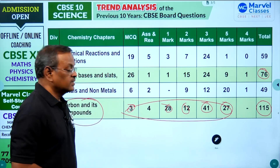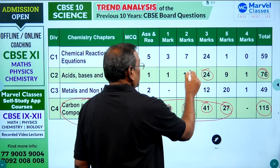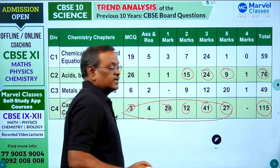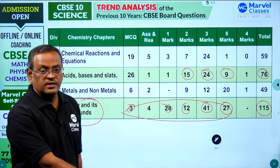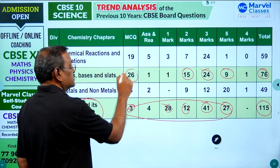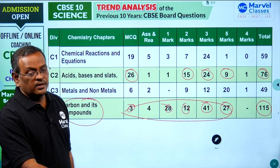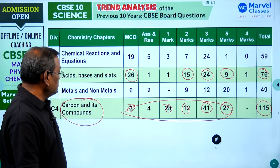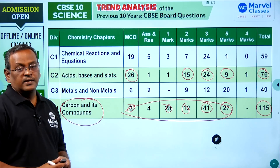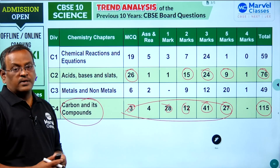The next maximum weightage chapter is Acids, Bases, and Salts, with 24 three-mark questions, 15 two-mark questions, and 9 five-mark questions — totalling 76 questions. Very importantly, there are also 26 MCQ questions in this chapter. If you are strong in concepts, you can easily get full marks in MCQ.